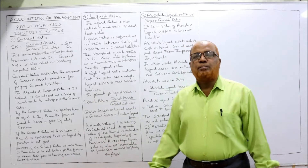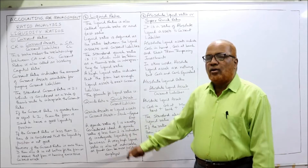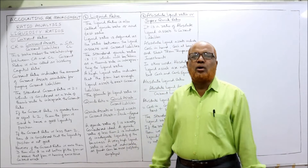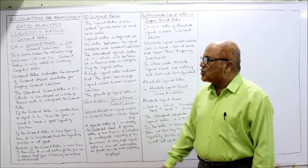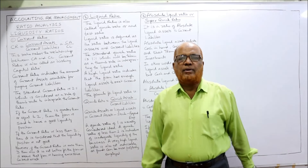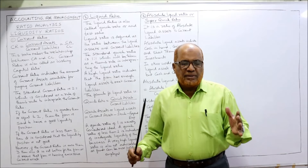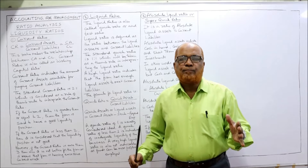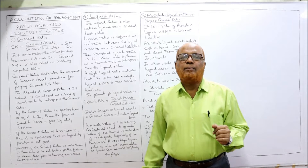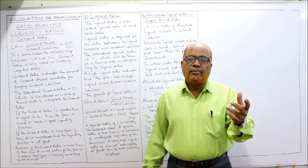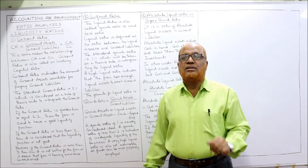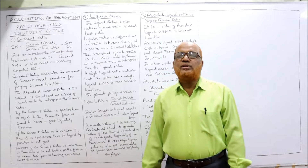This ratio is also called the working capital ratio. The current ratio indicates the amount of current assets available for paying current liabilities. If the business wants a good liquidity position, current assets should always be more than current liabilities, since current liabilities are paid from current assets. The standard current ratio is 2:1 as a rule of thumb.